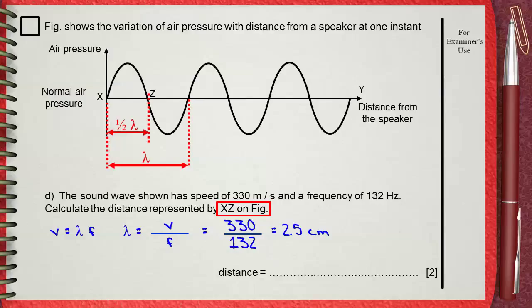The question is not answered yet, because we don't want a complete wavelength. We only want half of the wavelength, which is XZ. That's why 2.5 divided by 2, XZ, which is one half of the wavelength, equals 1.25 centimeter.